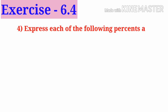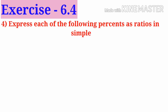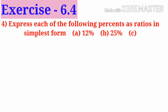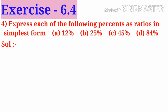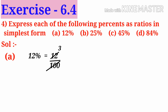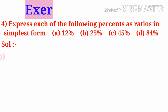Number 4: express each of the following percents as ratios in simplest form. A: 12 percent can be written as 12 by 100. On simplification by 4, we get 3 by 25, which can be written as 3 is to 25 in the simplest form.